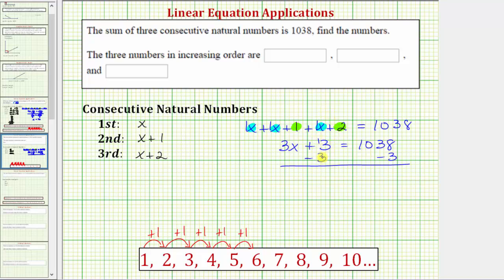Therefore we need to undo plus three by subtracting three on both sides of the equation. Subtracting three undoes plus three, or three minus three is zero, so we have three x equals 1,038 minus three, which is 1,035.